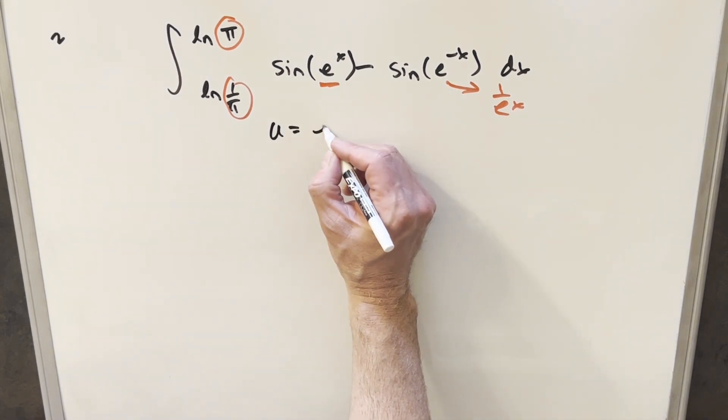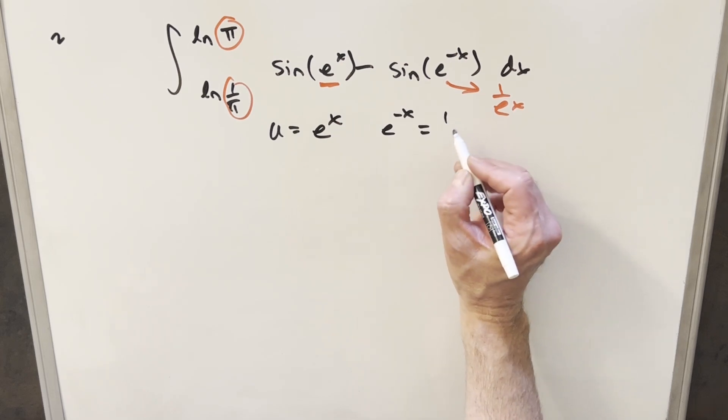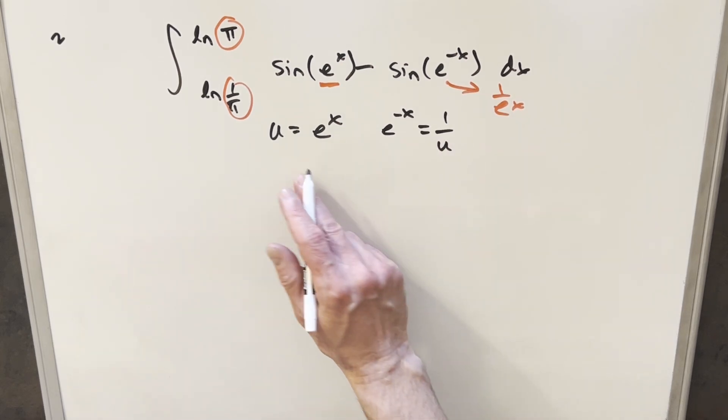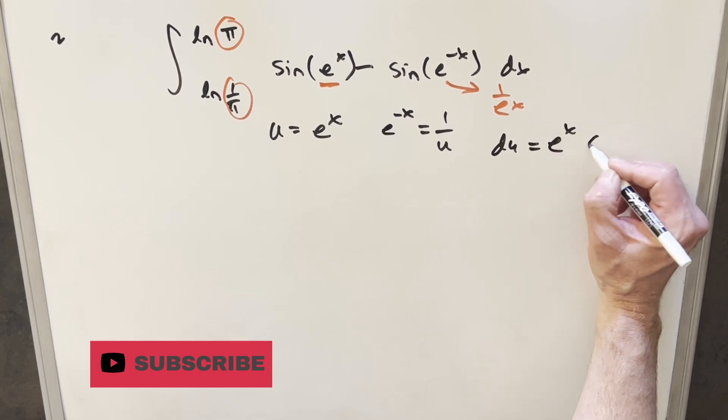We'll set u equal to e to the x. And for e to the minus x, I can write, we'll get a value for this. We can write this as 1 over u. And then we'll take a derivative here. So for my du value, we're going to have just e to the x dx.